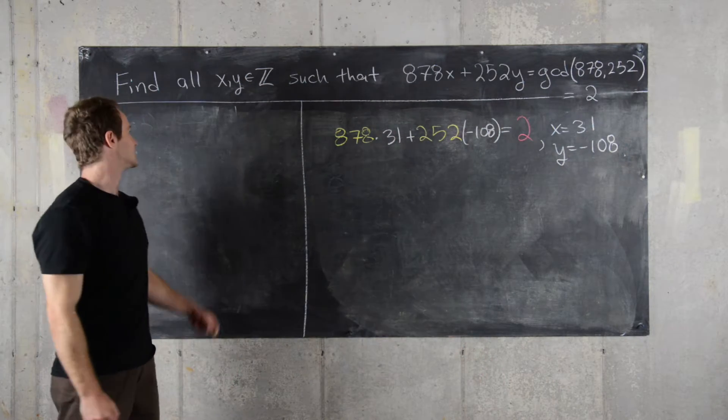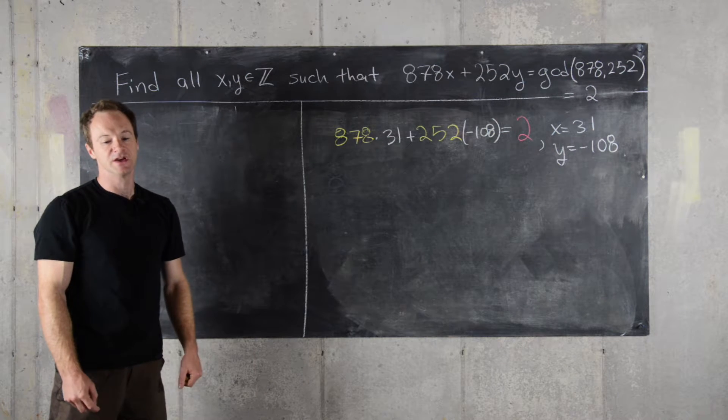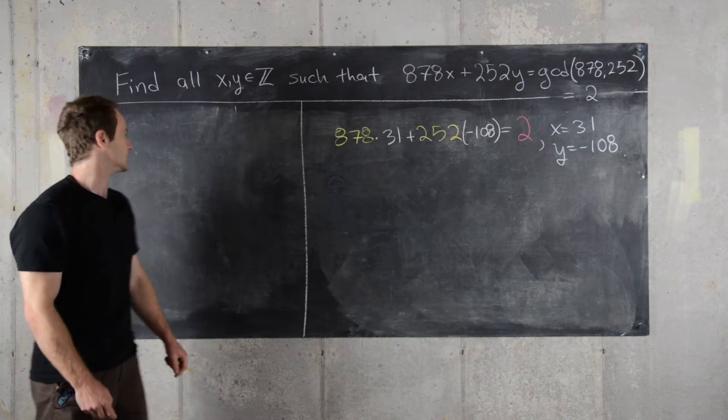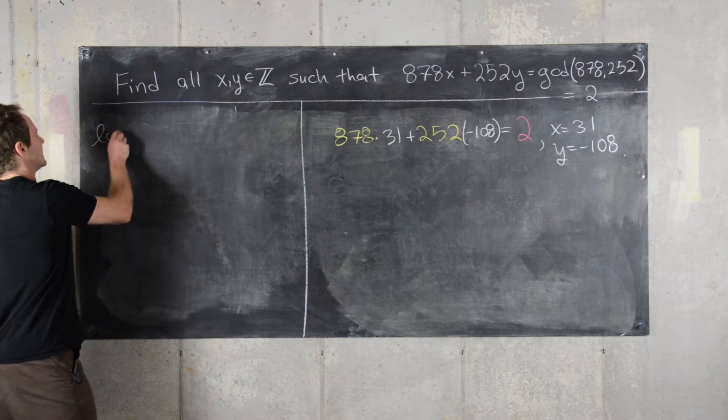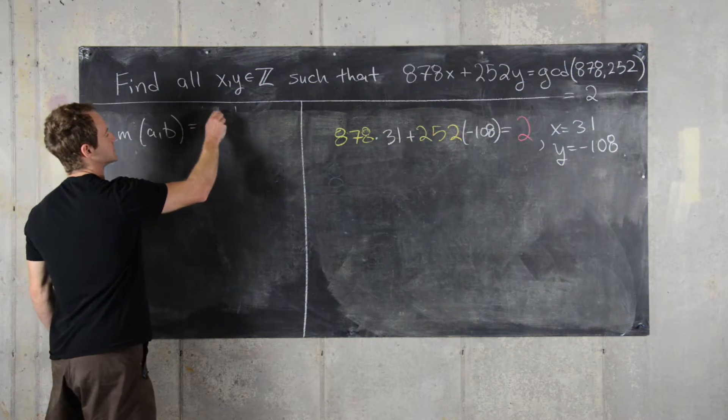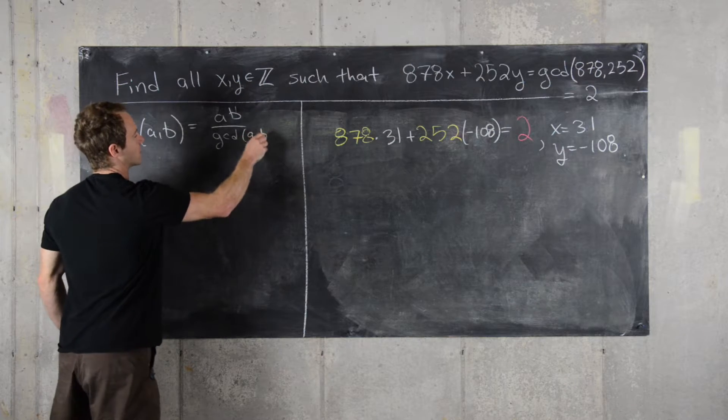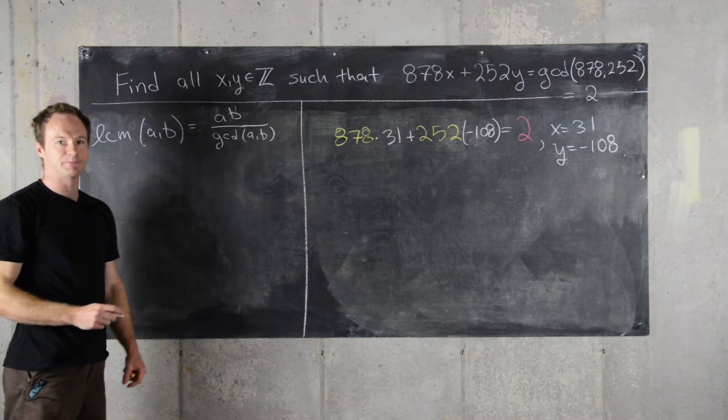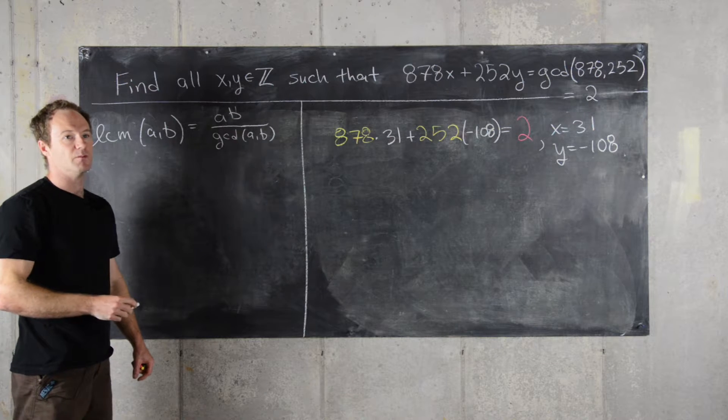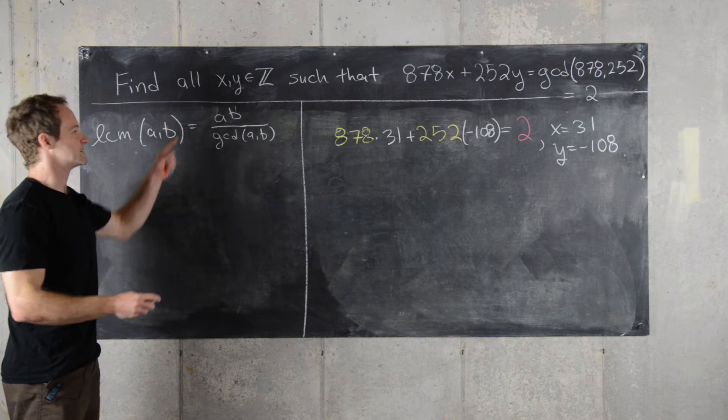So that's only one solution to this equation, and we're asked to find all solutions to this equation. So to do this, we'll use a trick involving the LCM of these two numbers. Let's recall that the LCM of A and B is equal to their product over their GCD. You can prove this; the LCM has a more technical definition than this, but this is equivalent.